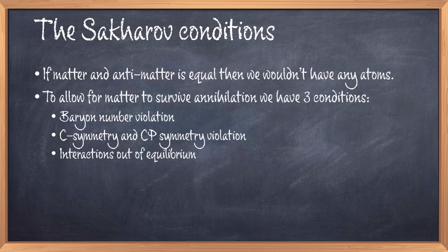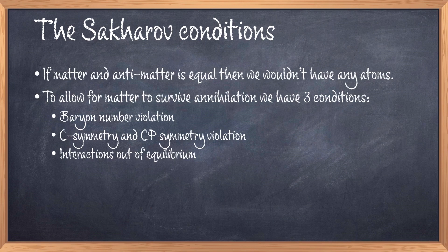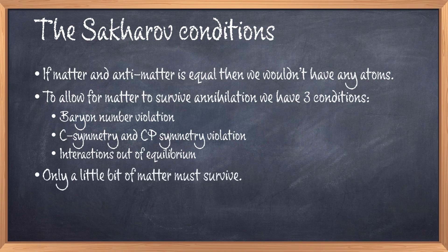Condition 1 is that baryon number is violated. Condition 2 is C symmetry and CP symmetry violation. And condition 3 is the interaction out of thermal equilibrium. If we can satisfy these conditions it is possible to have a mechanism for baryogenesis, or in other words a way to produce a surplus of matter. This surplus is actually very small because the photon to baryon ratio suggests that a lot of matter was formed initially but only a tiny fraction survived. But the standard model alone cannot account for this tiny fraction, so we must do something.